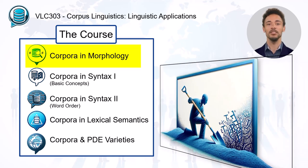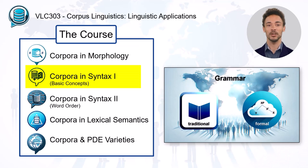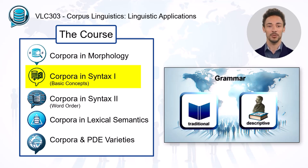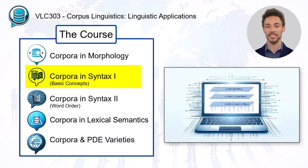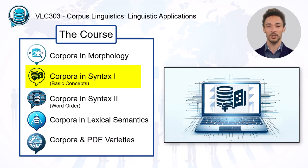In Unit 2, we delve into grammar. This unit reviews different types of grammar, their fundamental principles and their position within linguistics. Furthermore, we look at the major syntactic categories from sentences to words. In both cases, we will show how corpora can be used to analyze grammatical constructions in present-day English.